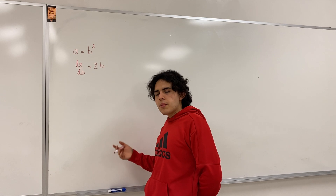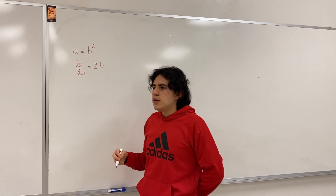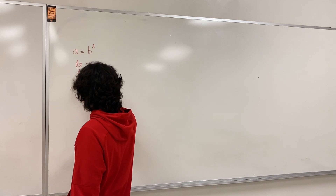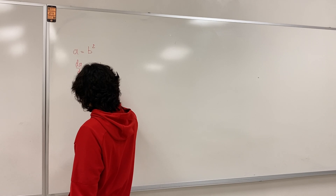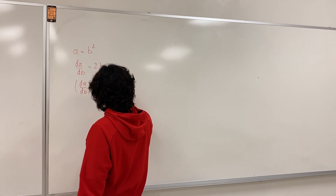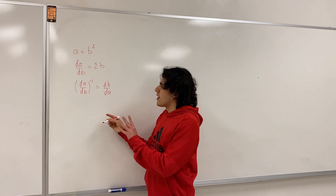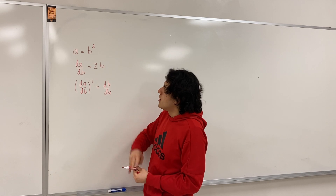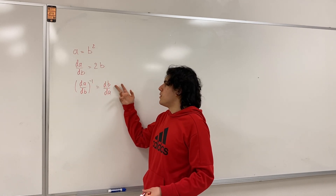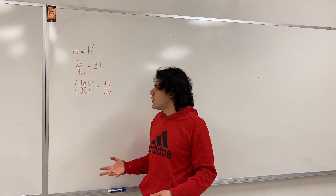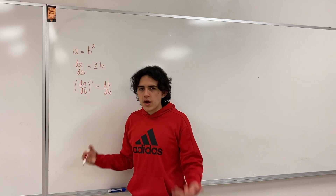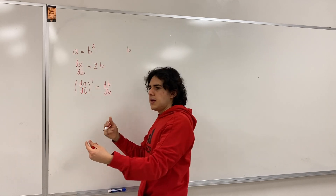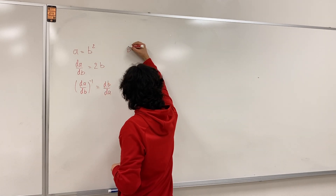If you're thinking about these in terms of dependent and independent variables, you likely won't do this. But what I want to say is: (da/db)^(-1) = db/da. Now, this is sometimes considered a crime in math — some teachers might object — because what I'm saying is: take the derivative of a with respect to b and just flip it to get the derivative of b with respect to a. If you're thinking in terms of dependent and independent variables it feels wrong, but if you're only thinking in terms of quantities, this makes sense.